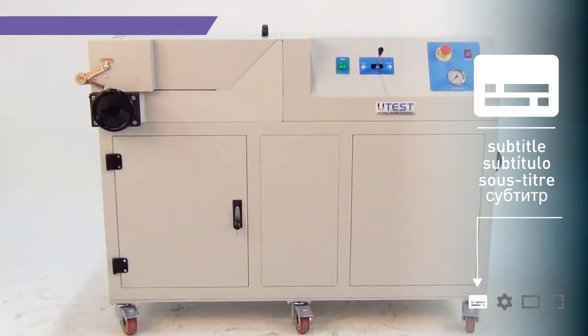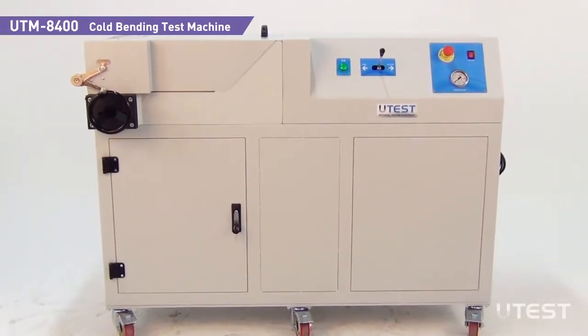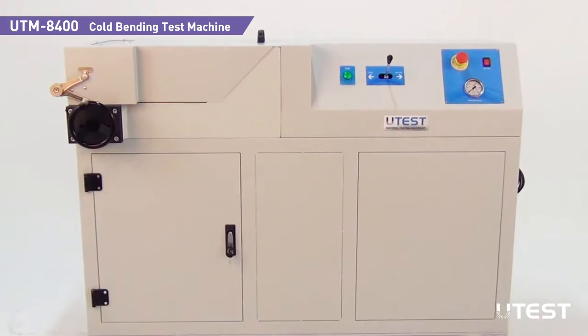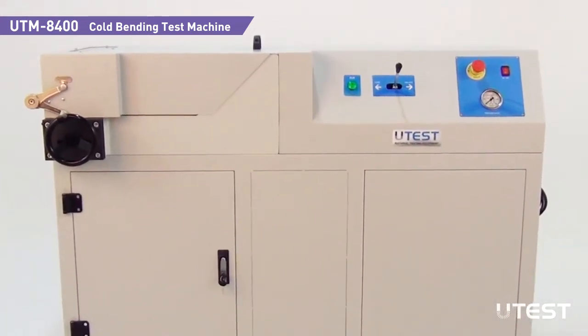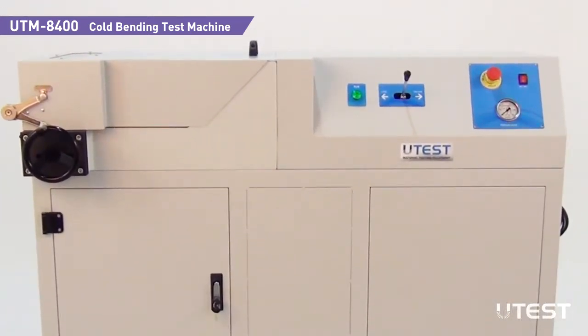UTEST UTM8400 cold bending test machine is used for bending and re-straightening of reinforcing steel bars and it has a loading capacity of 150 kN.